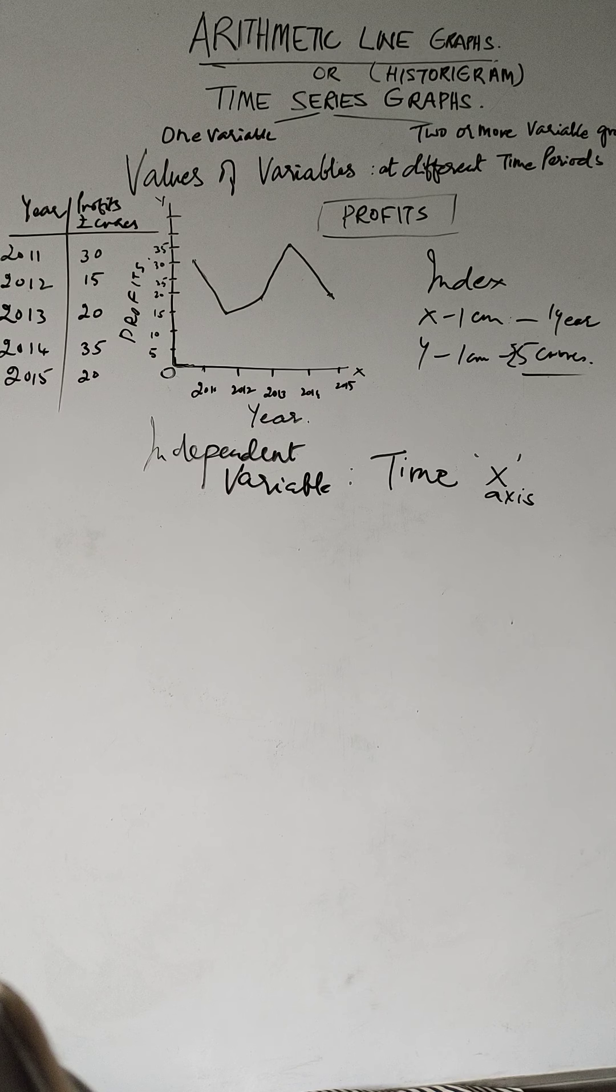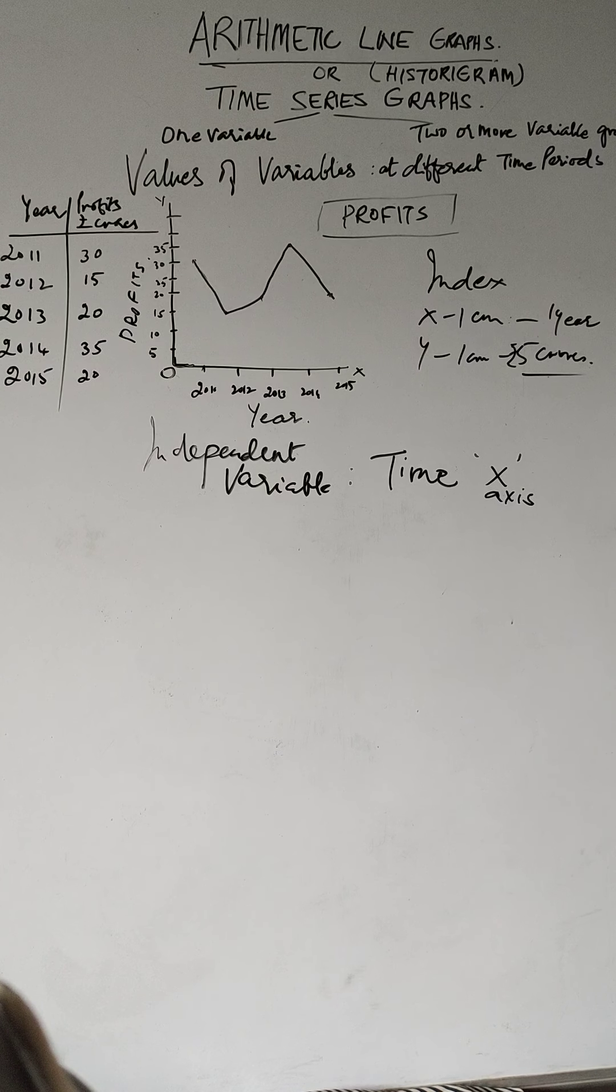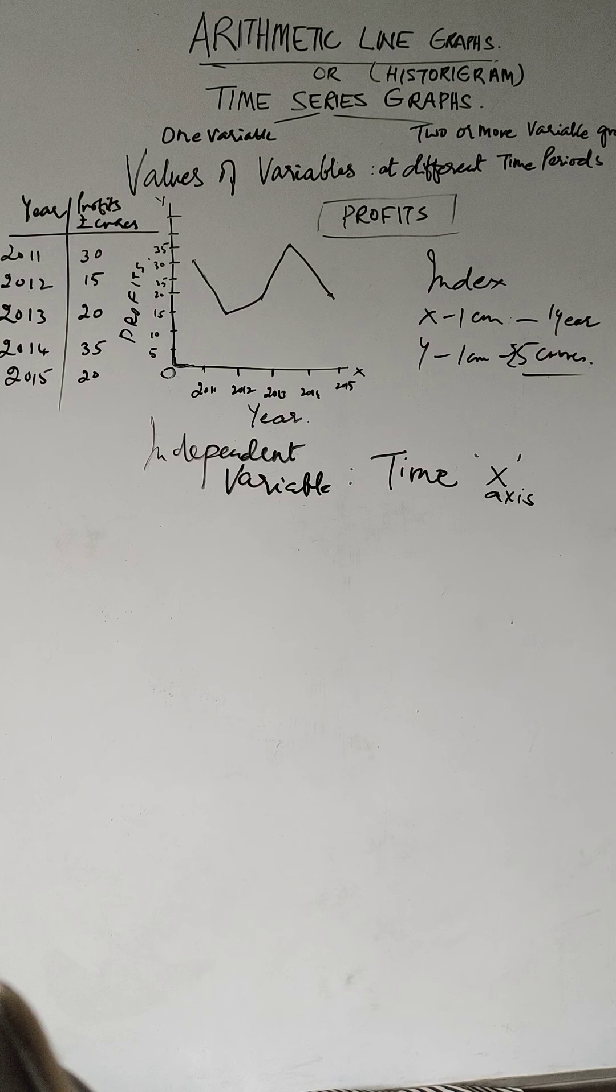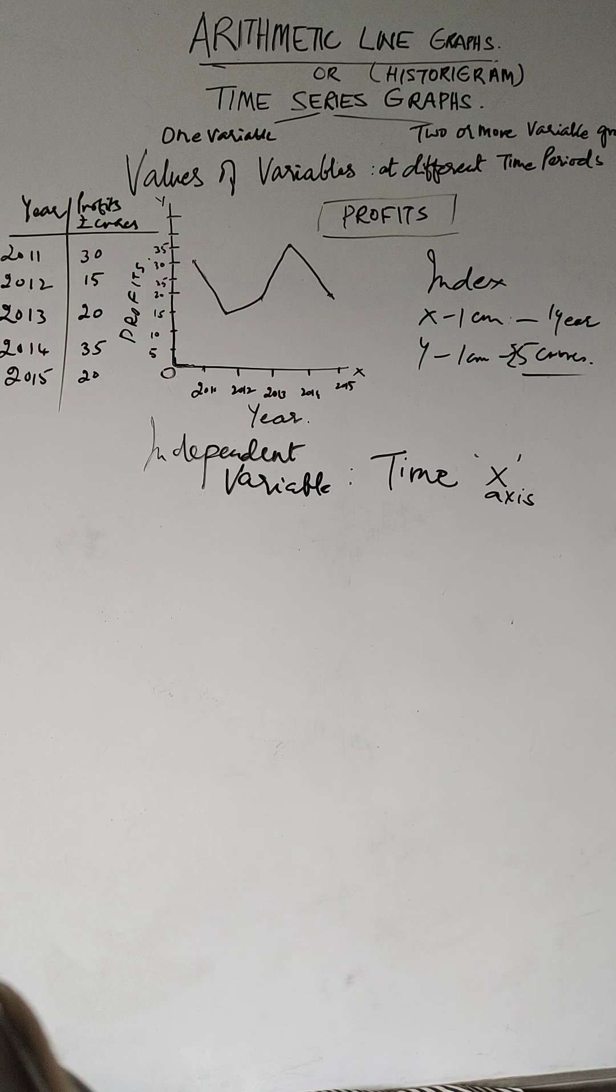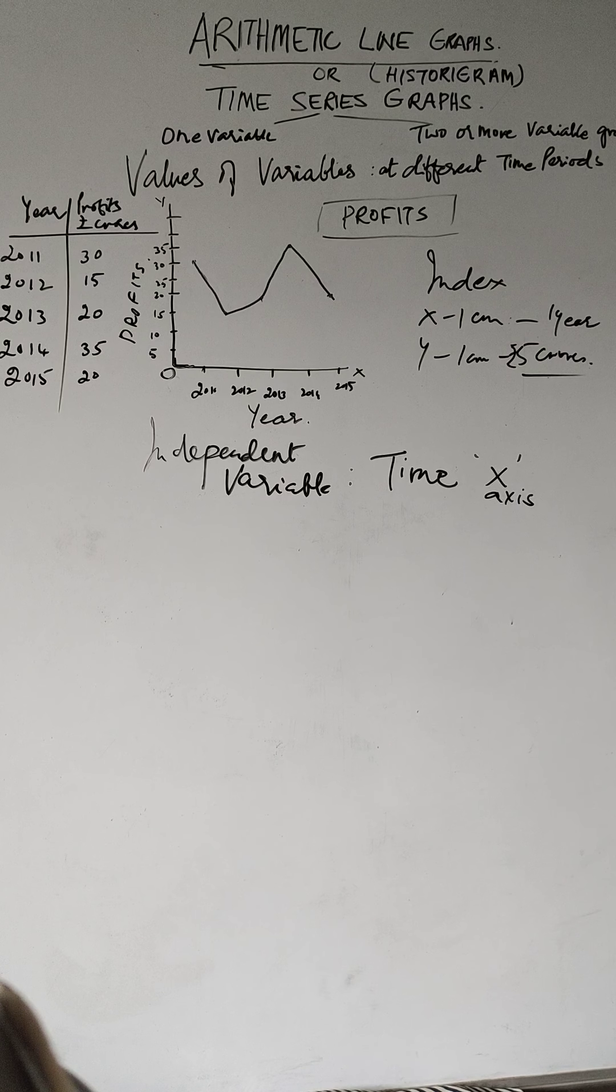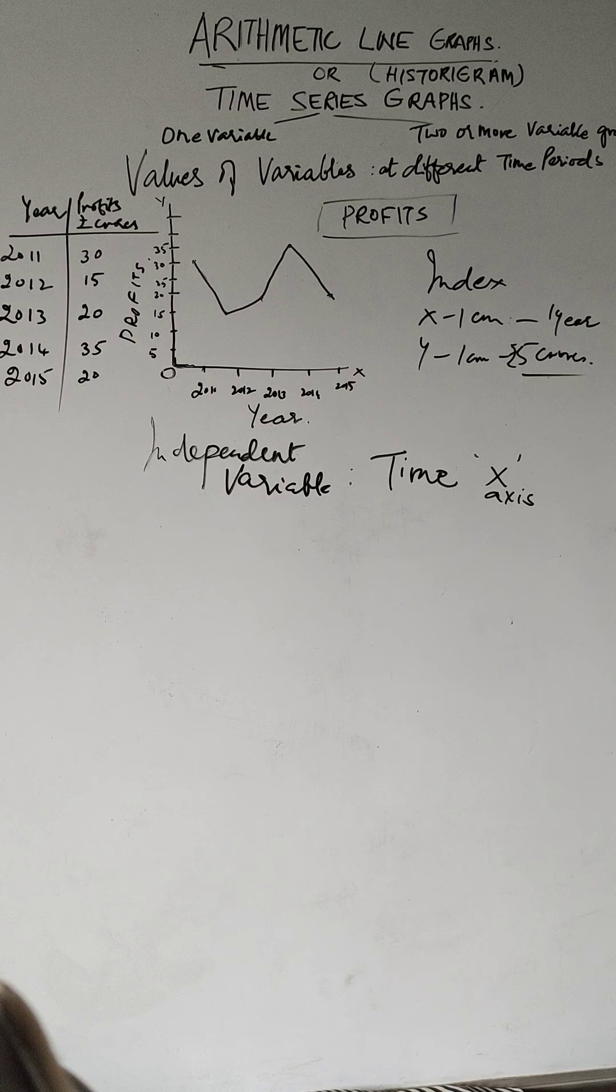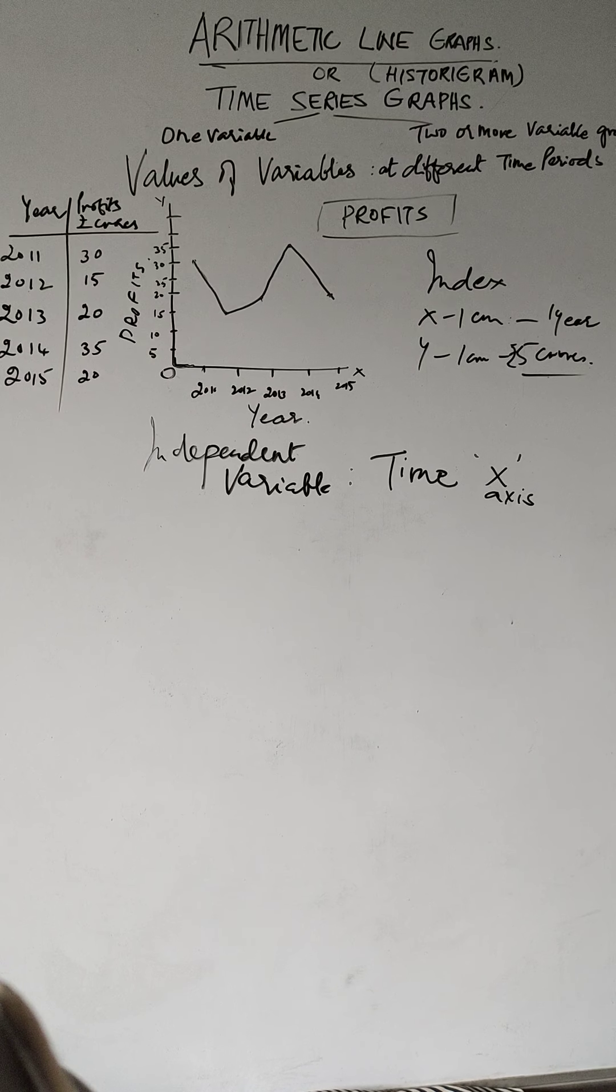These dots are then joined by a straight line. You can use a ruler or you can use your free hand. Thereby you can come to know about the fluctuations of the line itself, which will show you the fluctuations in the variable - the profits in this case.